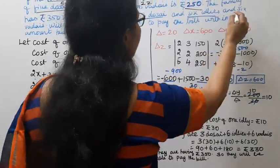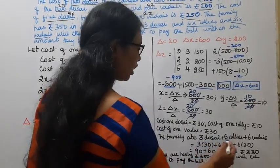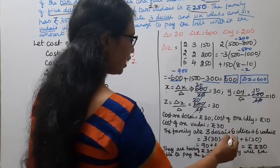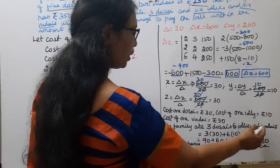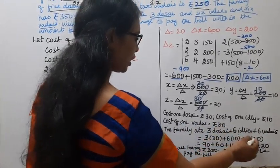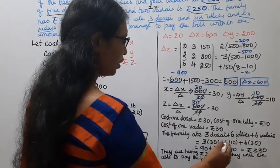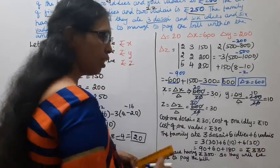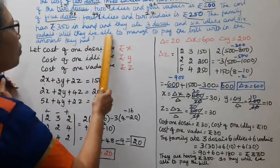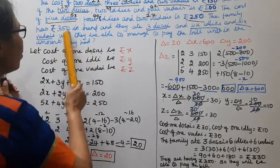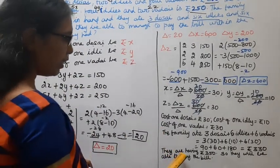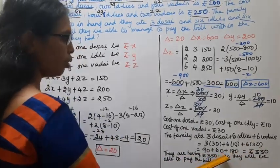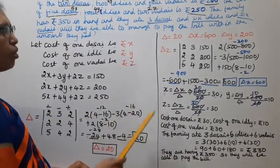The family ate 3 dosai, 6 idlis, and 6 vadais. So the total bill is 3×30 + 6×10 + 6×30 = 90 + 60 + 180 = Rs. 330. They are having Rs. 350 in hand, and their bill is only Rs. 330, so they will be able to pay the bill.